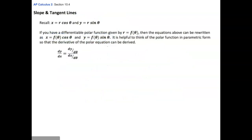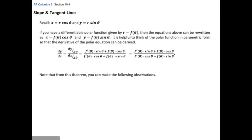Putting it all together gives us the formula you use for taking the derivative in polar form. dy/dx equals [f′(θ)·sinθ + f(θ)·cosθ] over [f′(θ)·cosθ − f(θ)·sinθ]. This comes directly from the parametric form of the derivative.